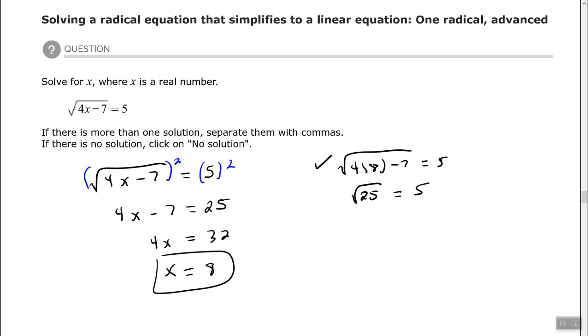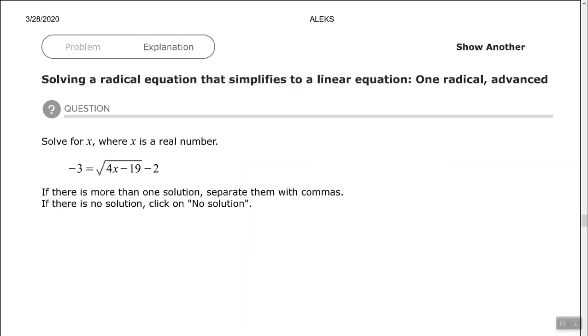All righty let's try one more of these. So this one we have negative 3 equals the square root of 4x minus 19 minus 2. Now before you say no solution you must make sure the radical is isolated. I'm going to swap sides here.